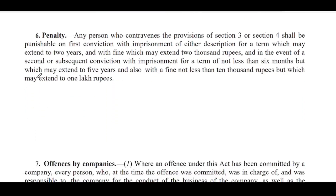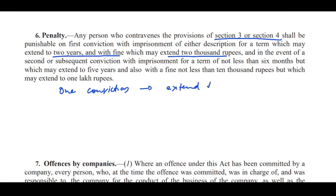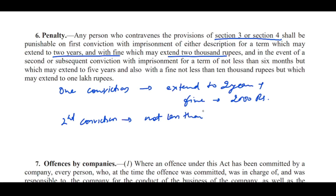Section No. 6: Penalty. Any person who contravenes the provisions of Section 3 or 4 shall be punishable on first conviction with imprisonment of either description for a term which may extend to 2 years and with fine which may extend to 2,000 rupees. In the event of a second or subsequent conviction — imprisonment for a term not less than 6 months but which may extend to 5 years, and also fine not less than 10,000 rupees but which may extend to 1,00,000 rupees.